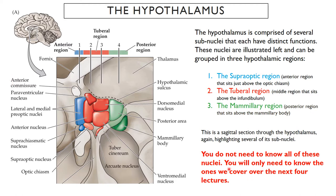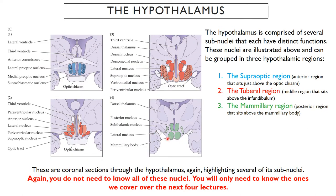You do not need to know all of these nuclei — only the ones we cover over the next several lectures. This is just to provide orientation so you have some sense of what the hypothalamus looks like. Now we're looking at a series of coronal sections going through the hypothalamus at these different subregions — essentially the same nuclei but now on both left and right. We're taking sections going coronally, starting rostral and going all the way to caudal.